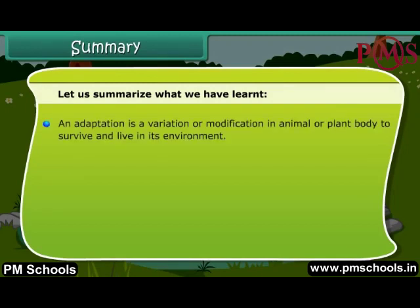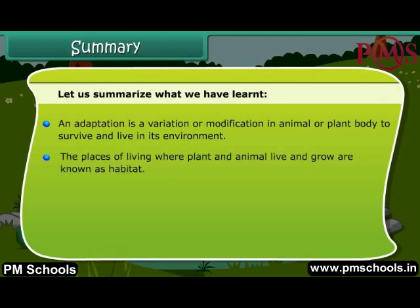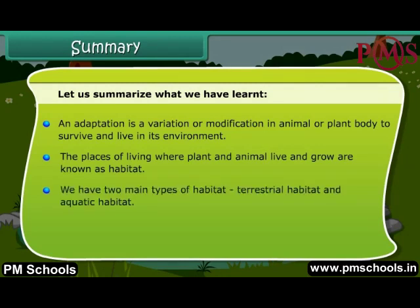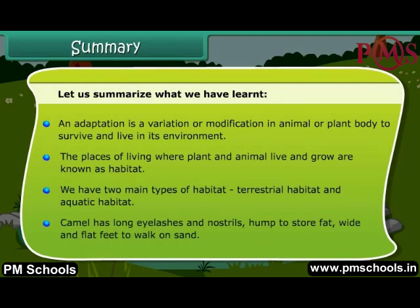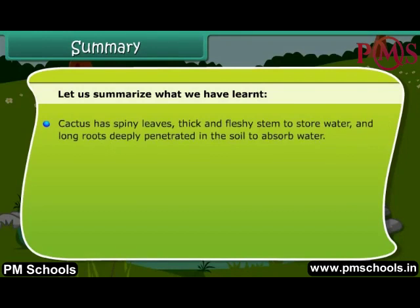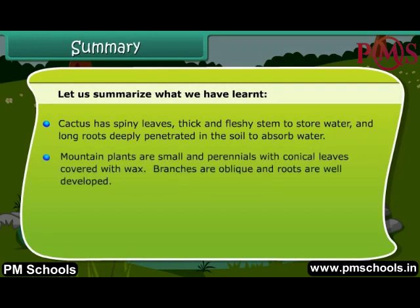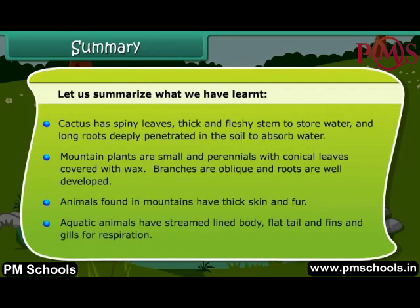An adaptation is a variation or modification in an animal or plant body to survive and live in its environment. The places of living where plants and animals live and grow are known as habitat. We have two main types of habitat: terrestrial habitat and aquatic habitat. Camel has long eyelashes, nostrils, a hump to store fat, and wide and flat feet to walk on sand. Cactus has spiny leaves, a thick and fleshy stem to store water, and long roots deeply penetrated in the soil. Mountain plants are small and perennials with conical leaves covered with wax; branches are oblique and roots are well developed. Animals found in mountains have thick skin and fur. Aquatic animals have a streamlined body, flat tail and fins, and gills for respiration.